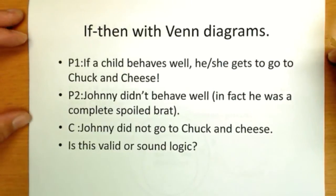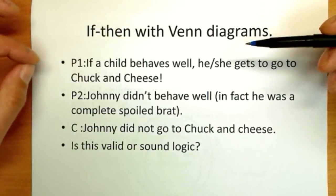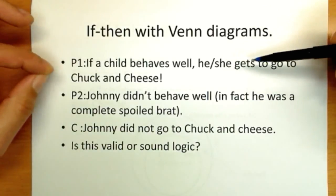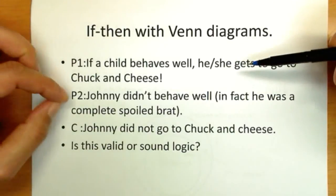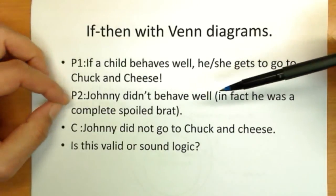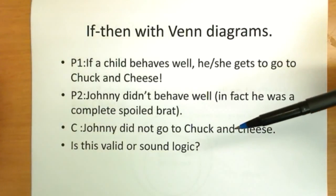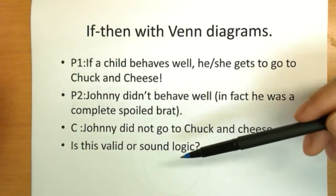And now we're going to examine if-then logic with Venn diagrams. So this is getting a little bit closer to the real world. If a child behaves well, he or she gets to go to Chuck and Cheese. Premise two, Johnny didn't behave well. In fact, he was a complete brat. So conclusion, Johnny did not go to Chuck and Cheese. You see this logic used all the time and it's used incorrectly a lot of the time. Is this valid or sound logic?